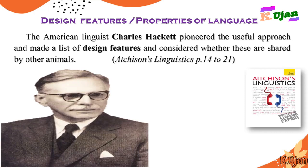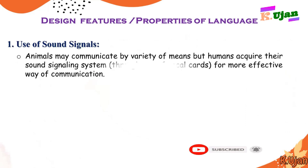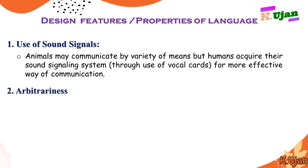Let's talk about these properties or design features one by one. Number one: use of sound signals. According to Charles Hockett, animals may communicate by a variety of means — through gestures or other signals — but humans acquire their sound signaling system through the use of vocal cords. We use vocal cords for making sound signals, which is a more effective way of communication than animals use.